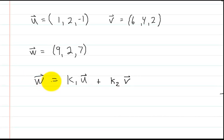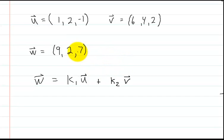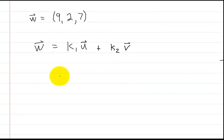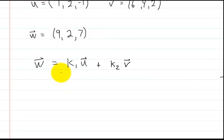What they mean is, if I multiply vector u by some constant and I multiply vector v by some constant, I should be able to get these values in w. So let's go ahead and do this. The first thing I'm going to do is write all three of these vectors together in a matrix.